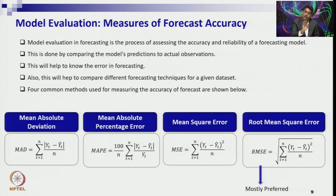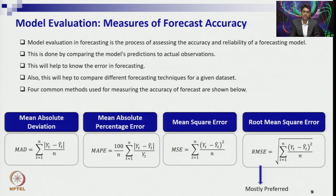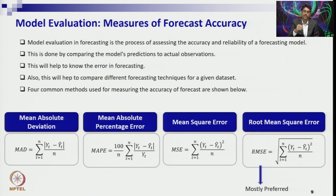In time series data, when you have past data and want to make a forecast, you must calculate the measure of accuracy. Generally there are four methods we will discuss today: Mean Absolute Deviation (MAD), Mean Absolute Percentage Error (MAPE), Mean Square Error (MSE), and Root Mean Square Error (RMSE), which is very popular in the financial domain.